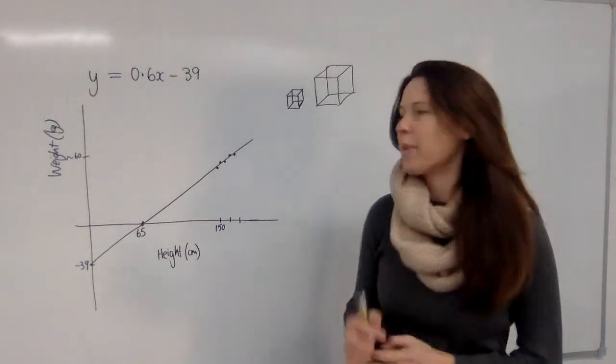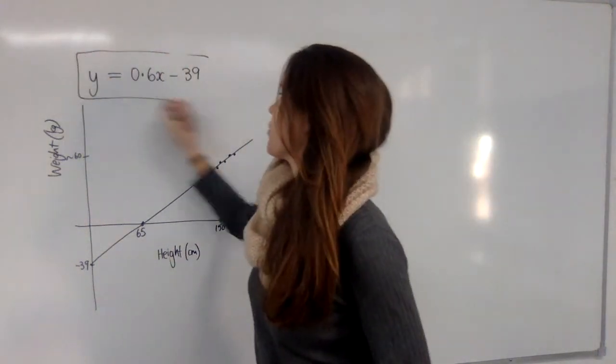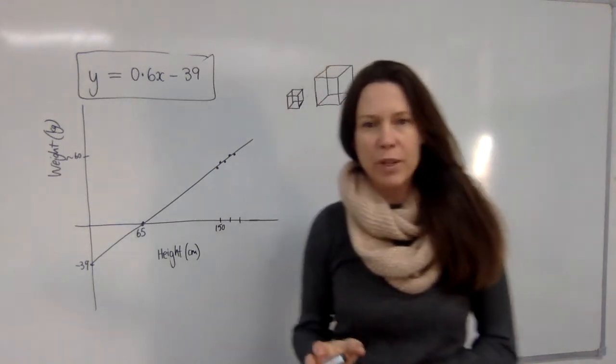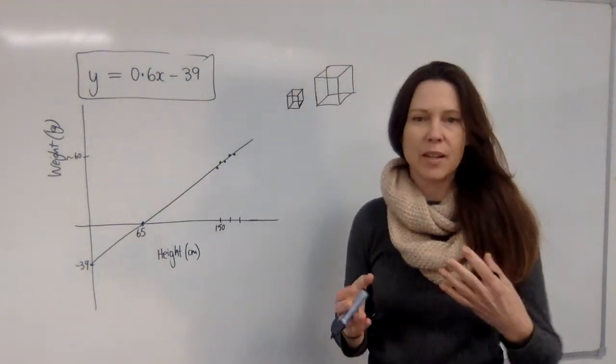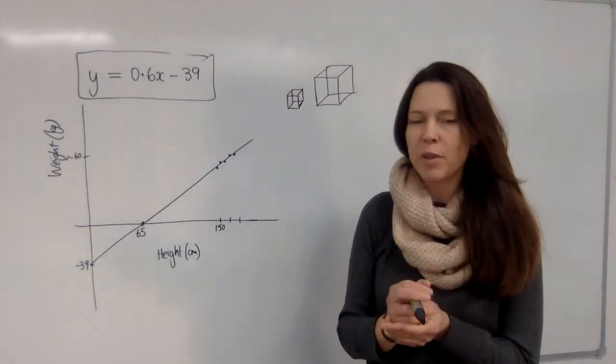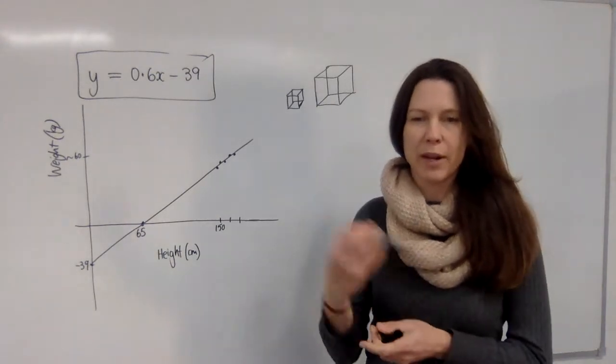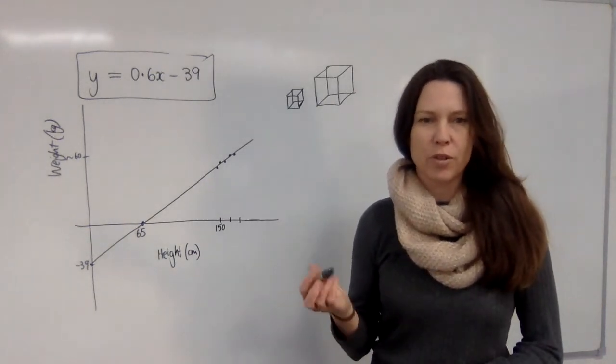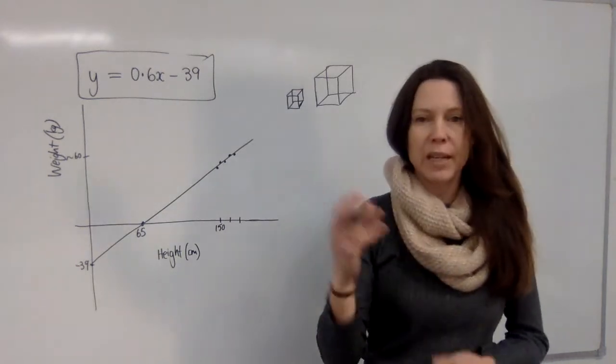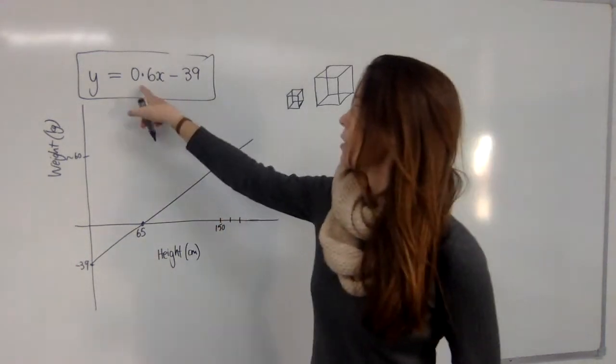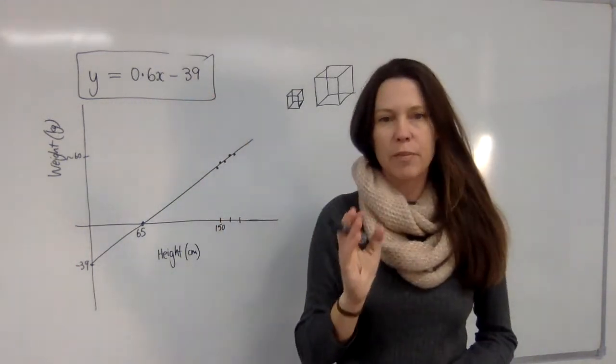Now let's stop for a moment and think about the line of best fit that we found in the last example when we looked at five students' height and weight. In fact they weren't even real people, I just made up the data so that we could practice finding R, Pearson's correlation coefficient, and so that we could practice finding A and B which will give us the equation of the line of best fit.